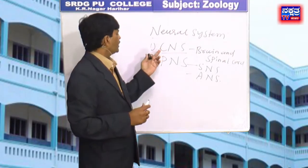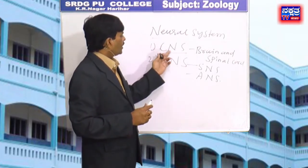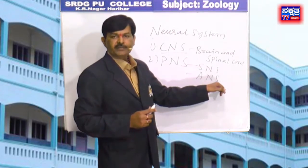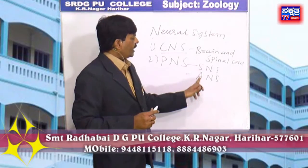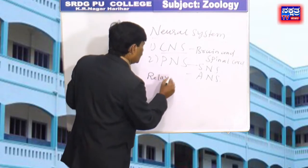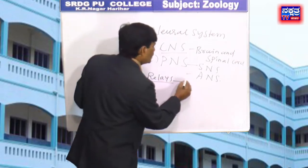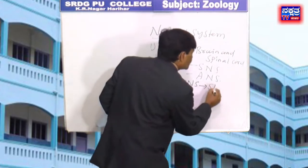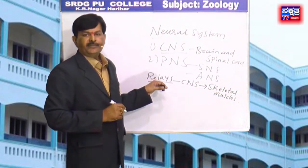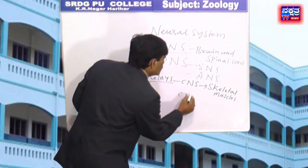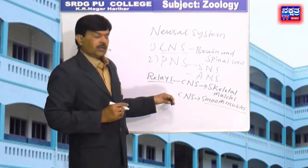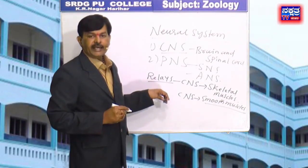The central nervous system includes brain and spinal cord, whereas the peripheral nervous system includes somatic nervous system and autonomic nervous system. The somatic nervous system relays impulses from the central nervous system to the skeletal muscles, while the autonomic nervous system transmits impulses from CNS to smooth muscles. Therefore, in the given options, A — somatic nerves — is the right answer.